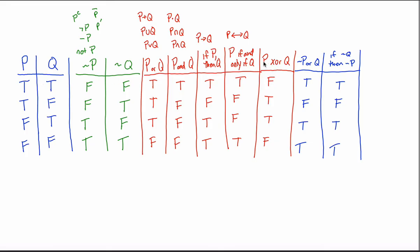There are other ways to write exclusive or. You can use the OR symbol (∨) with a line underneath it to distinguish it from regular OR. Another notation is a plus sign inside a circle (⊕). If you ever see either of those symbols, it means P exclusive or Q.